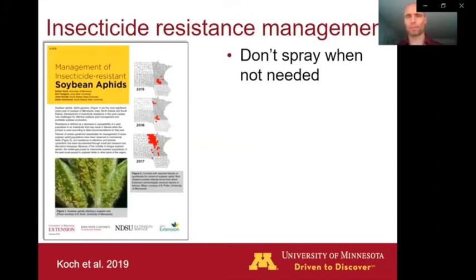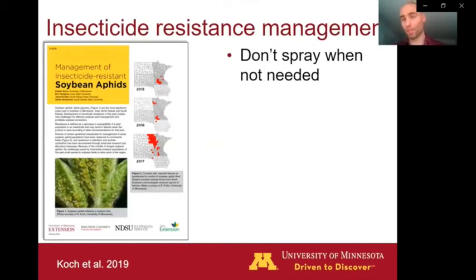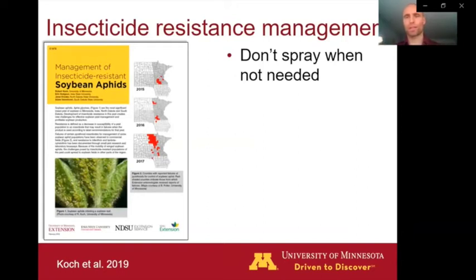It comes down to a few key points. First off, don't spray when it's not needed. So that means we need to get into our fields, scout them, estimating numbers of aphids and relating that to the threshold of 250 aphids per plant to decide when to apply that insecticide. Keep in mind that 250 aphids per plant is not the point at which we're incurring economic losses. This is a conservative threshold set well below the point where we would expect to see any kind of economic losses.